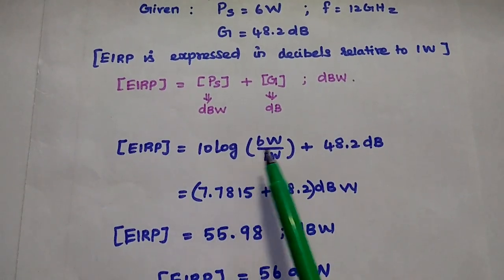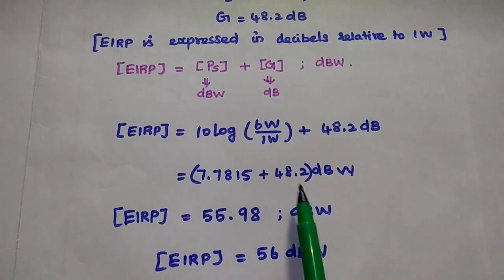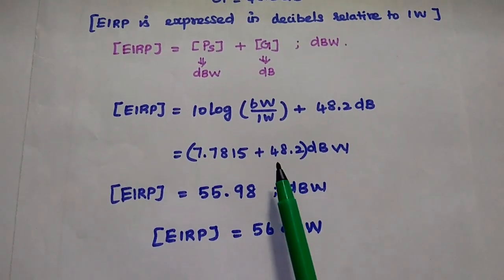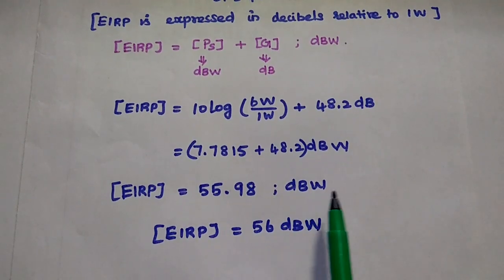Here 10 log 6 is nothing but 7.7815. We can simply add these two values. We can get 55.98 dBW.